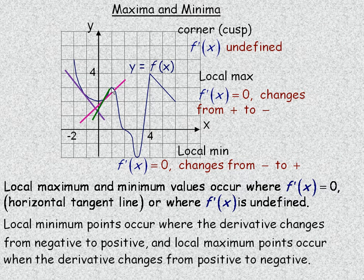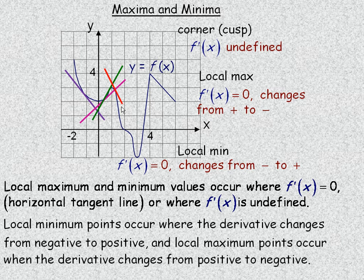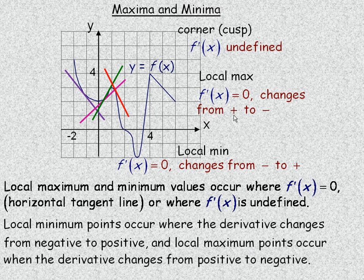For a local maximum, the opposite is true. To the immediate left, if you draw a tangent line, it's positively sloped. To the right, it's a negatively sloped line. So one of the characteristics of a local maximum point is that the derivative changes from positive on the left to negative on the right.